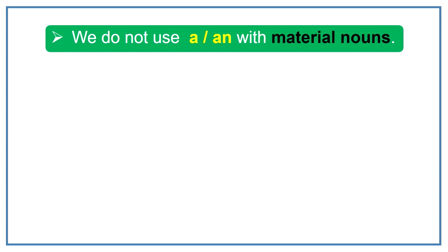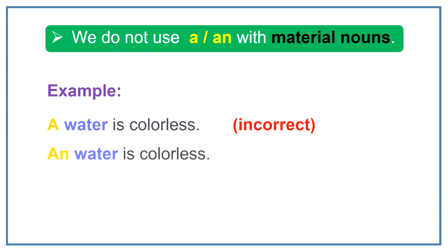If you have seen the last video of countable and uncountable nouns, we know that we do not use a or an with uncountable nouns and material nouns are uncountable so we will not use a or an with them. For example, a water is colorless. This is incorrect. An water is colorless. This is also incorrect. Water is colorless. This is correct.